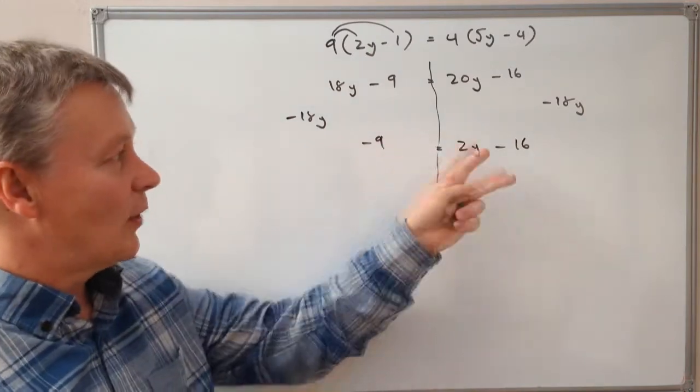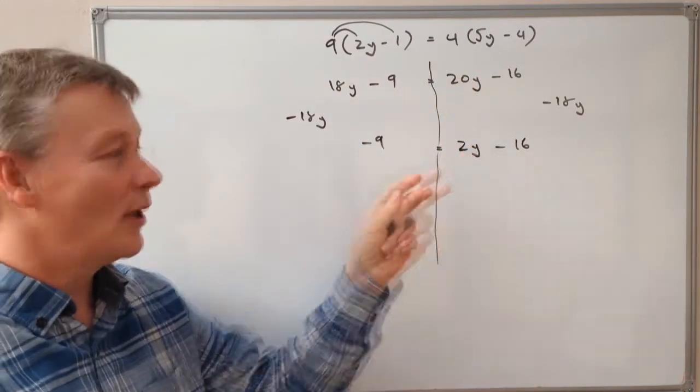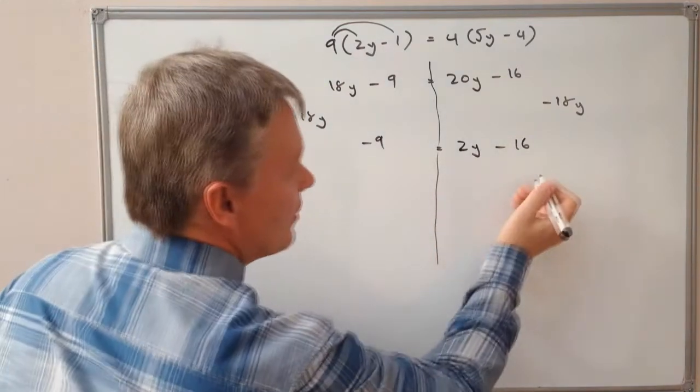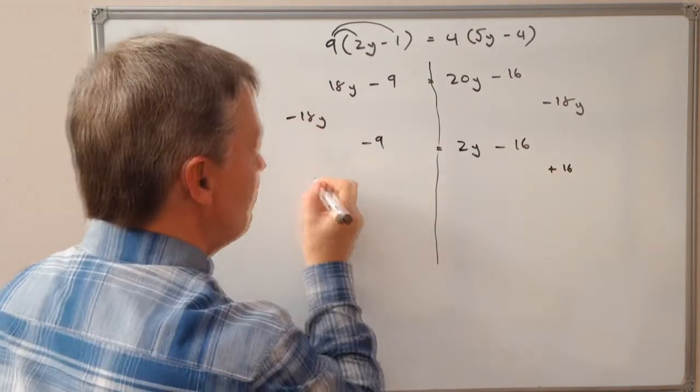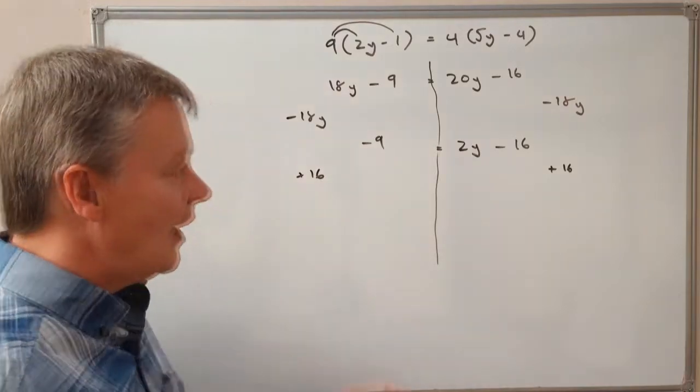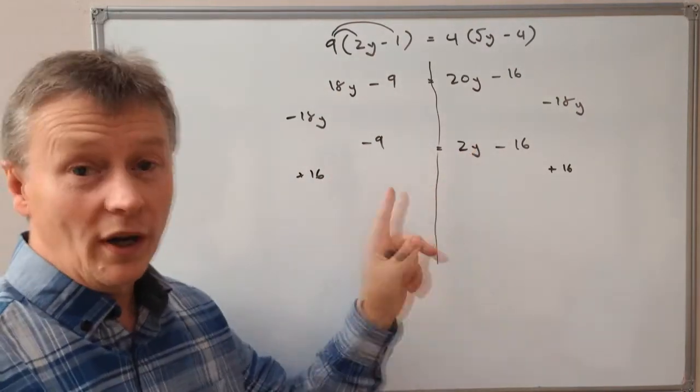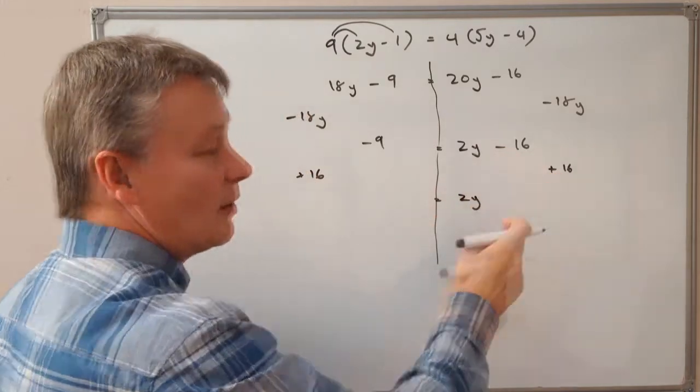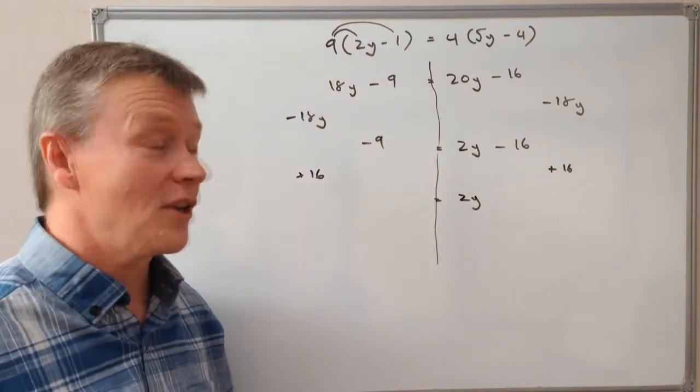This equation is exactly the same as this equation, I've just moved things around a little bit. So what I'm going to do now is add 16 to both sides, because if I do that, I'm going to just get 2y on its own, because the minus 16 and the positive 16 will cancel themselves out.